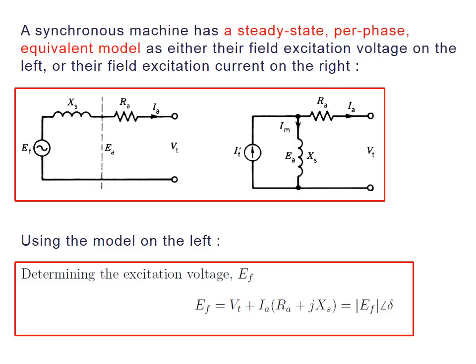A synchronous machine has a very simple steady-state per-phase equivalent model. You can use either the field excitation voltage or the field excitation current in your model. Using the model with field excitation voltage, we define by simple KVL the excitation voltage EF. EF equals VT — assuming VT at phase zero — plus the voltage drop across the resistance and reactance. So EF = VT + IA × (RA + jXS).